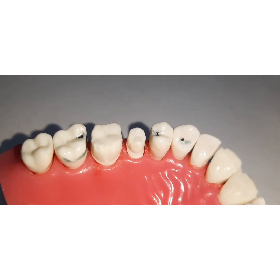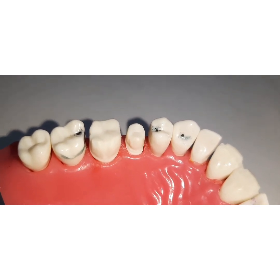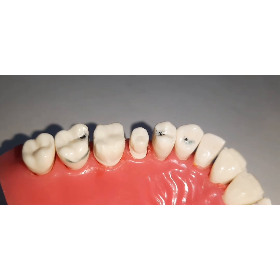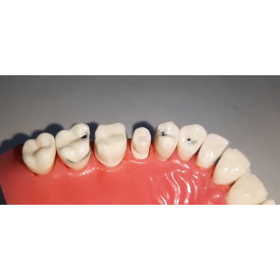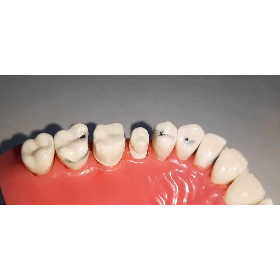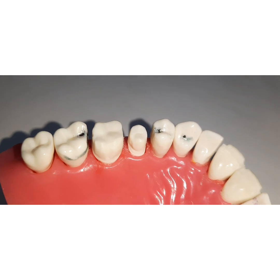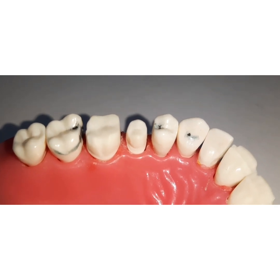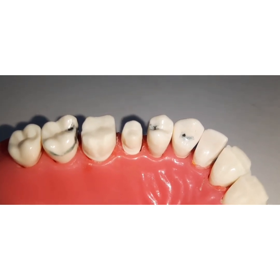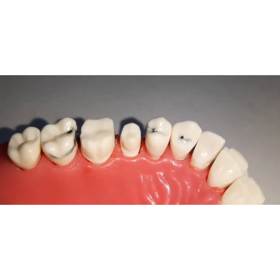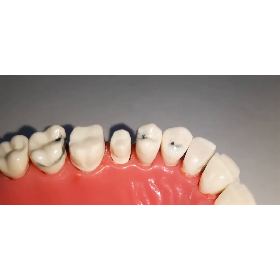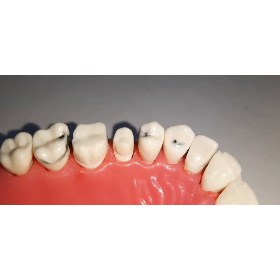Partial veneer crowns cannot be indicated in all patients and all types of teeth — there are indications and also contraindications. Patient selection is very critical for the success of the restoration. Partial veneer crowns are indicated in a healthy tooth with adequate crown length, an intact labial surface that does not require any contour modification, and a patient with good oral hygiene.